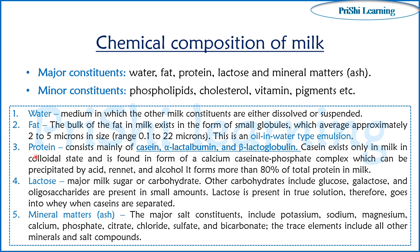Next is protein. The protein is mainly casein, alpha-lactalbumin, and beta-lactoglobulin. About 80% of milk protein is casein, and the remaining 20% is whey protein. Casein is the most abundant protein in milk. When we add acid, rennet, or alcohol, the casein precipitates — this is how curd is formed.